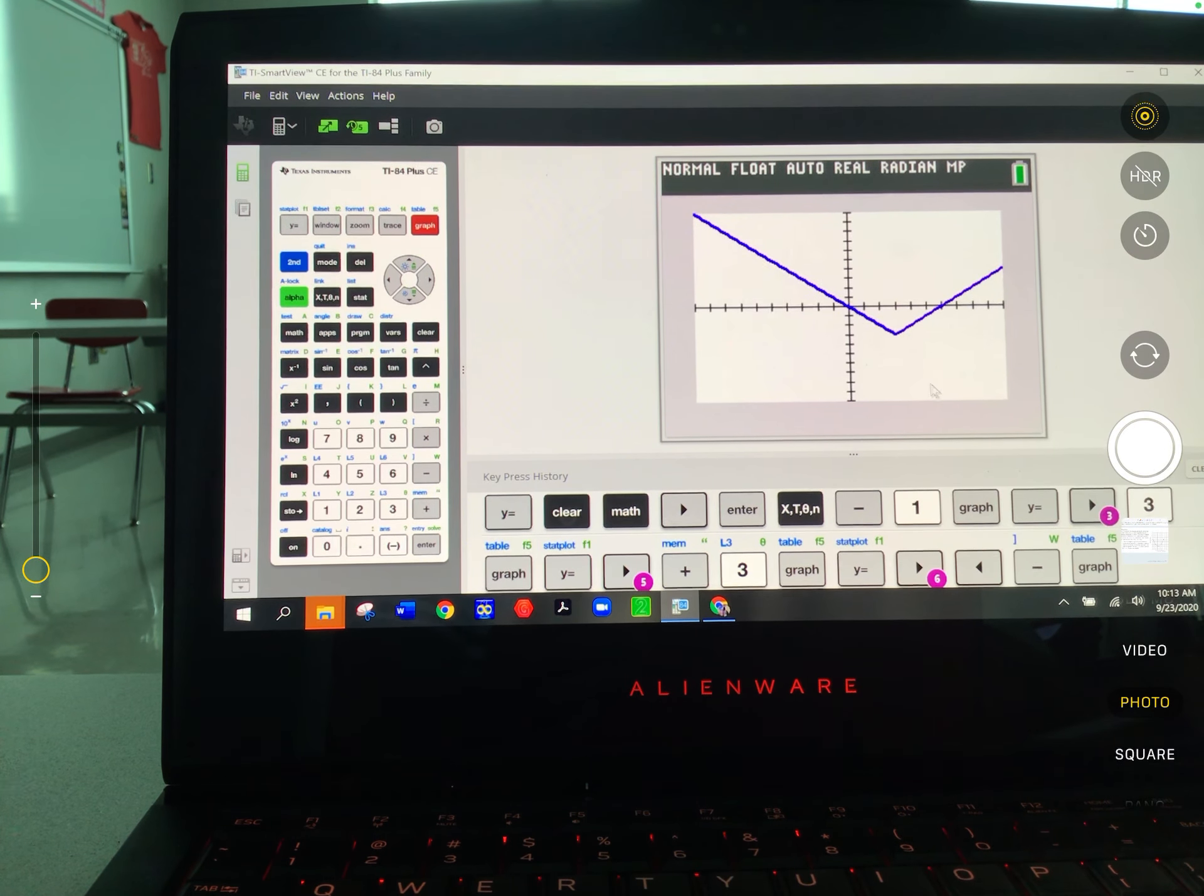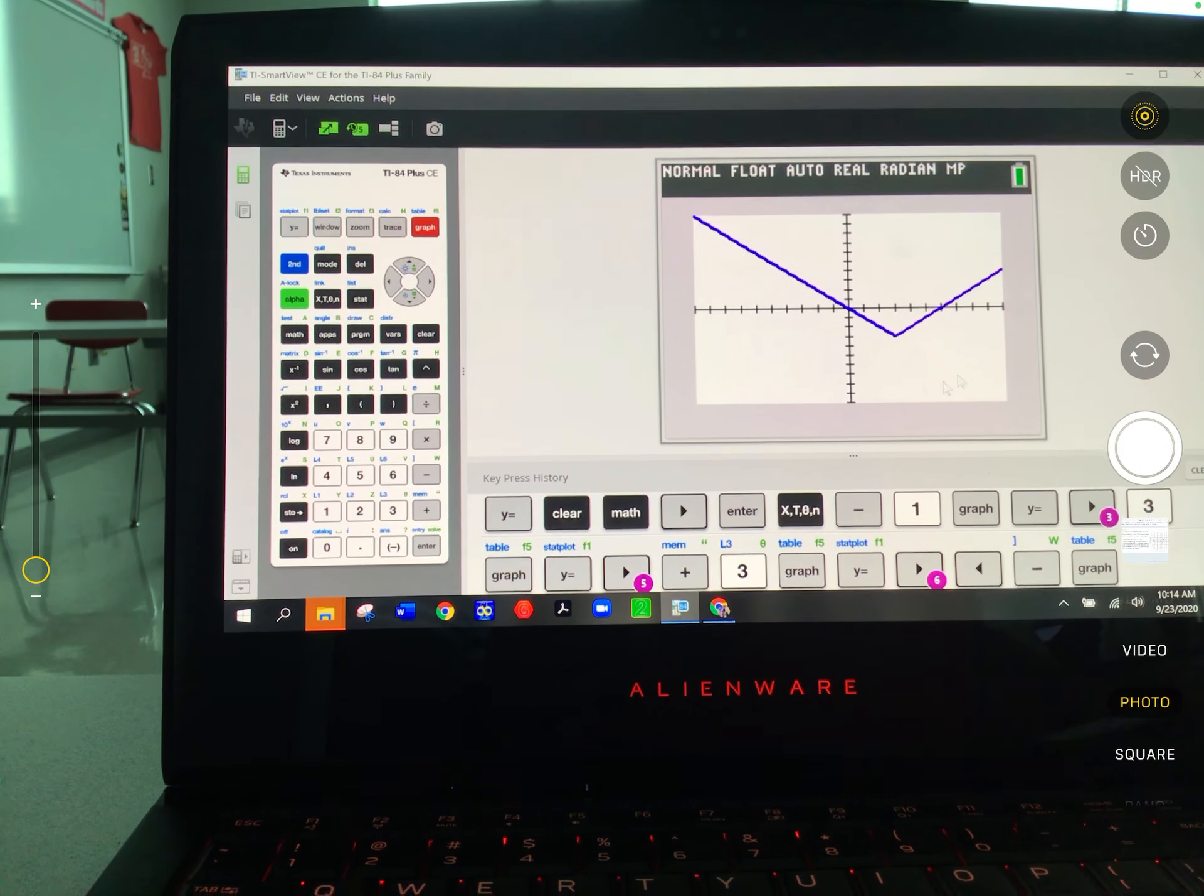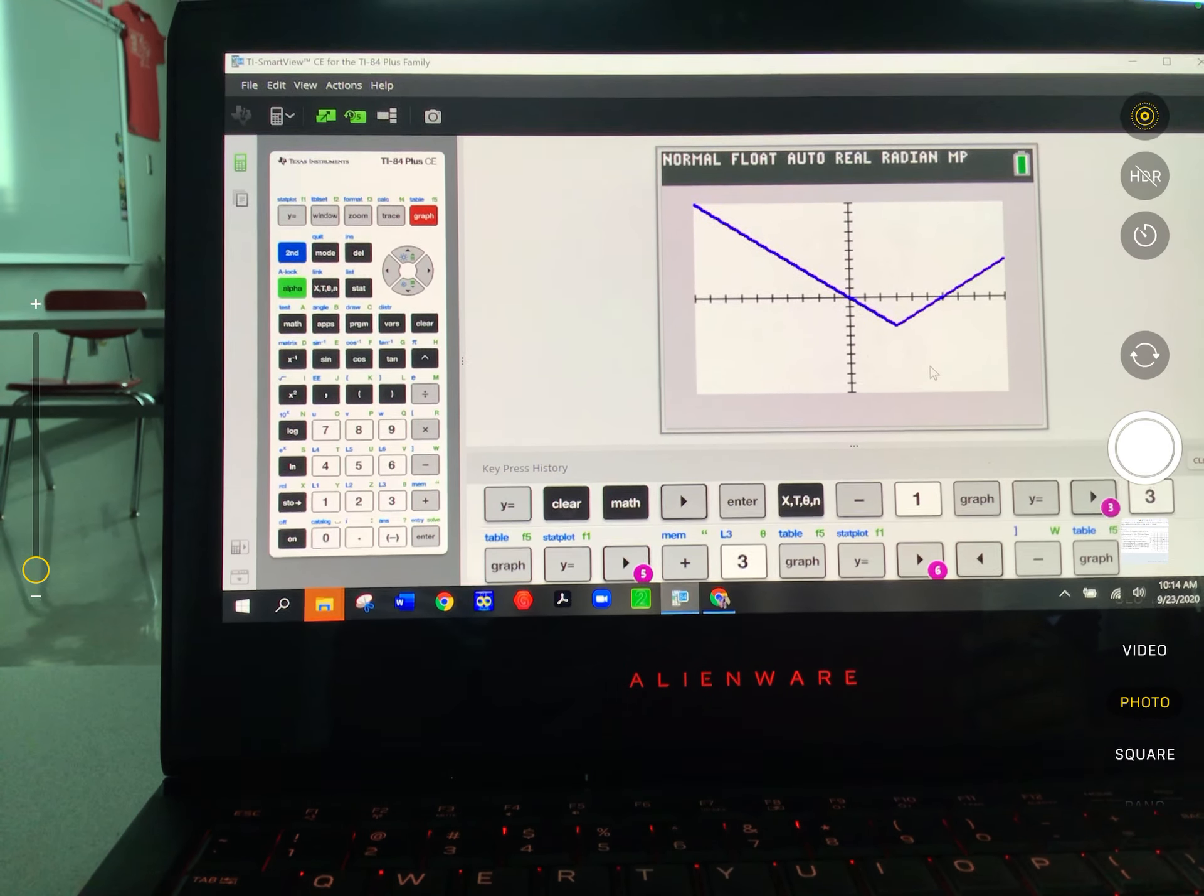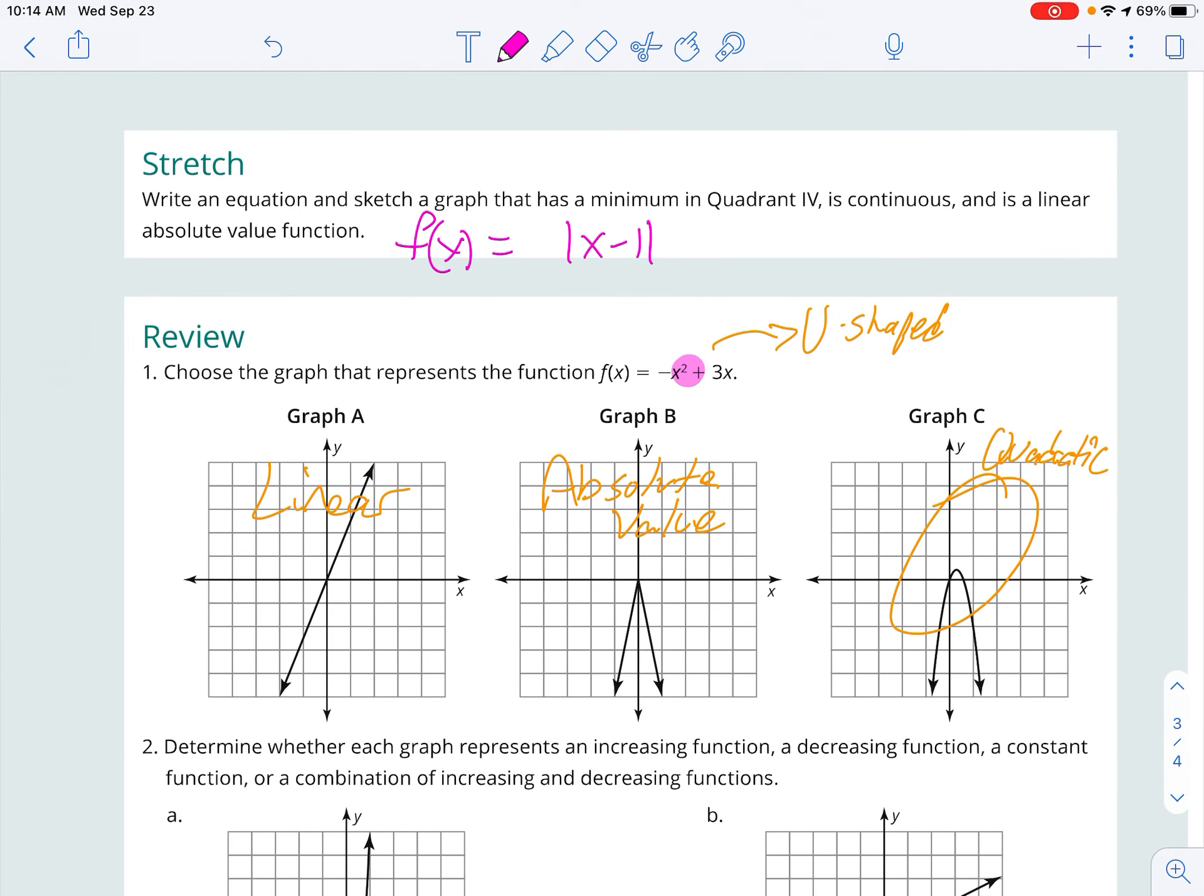So this is in quadrant 4. It is continuous. It is absolute value. That all looks good. Let's go back to the answer. And I came up with actually x minus 3, and then outside of that, a minus 3. And what we got then was the minimum in quadrant 4. And it continues like that, but that minimum is in quadrant 4 then. Make sure you know your four quadrants.